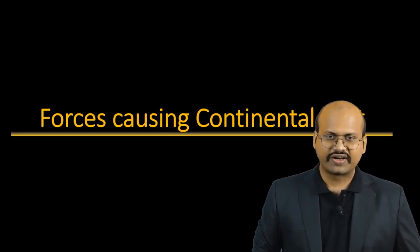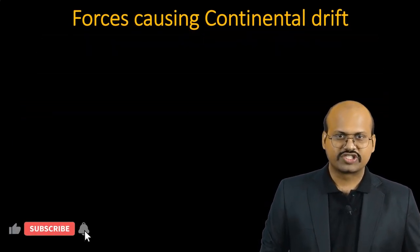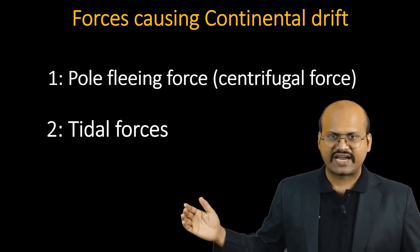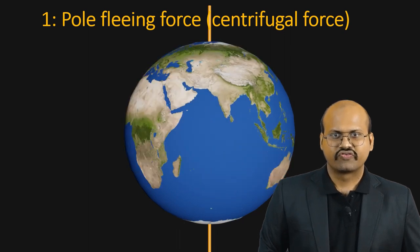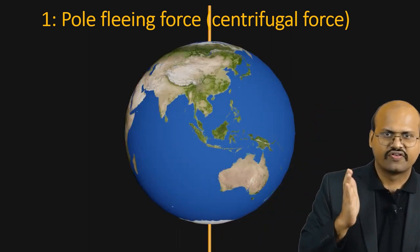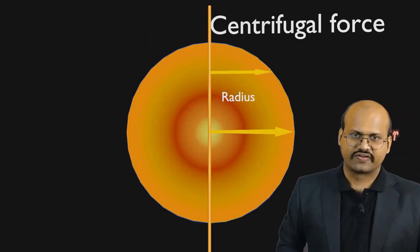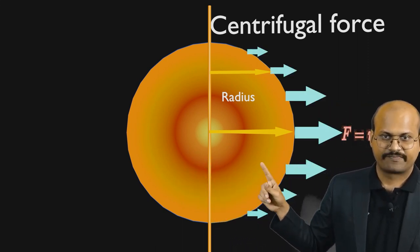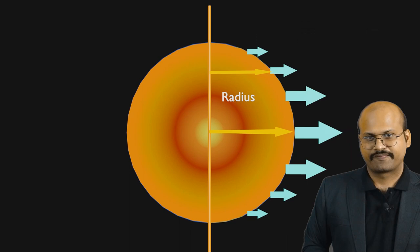Wegener also tried to define the forces responsible for continental drift. He mainly mentioned two forces. The first was the Polflucht force, also called the centrifugal force. Centrifugal force is generated by any rotating body — it is a force which acts away from the axis of rotation. Since our earth rotates on an axis, it creates centrifugal force. This centrifugal force is directly proportional to the radius of rotation — the greater the distance from the axis of rotation, the greater the centrifugal force.